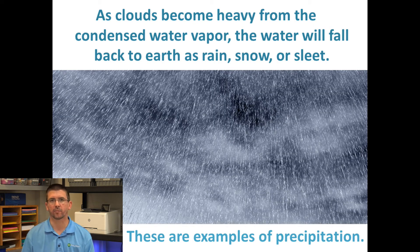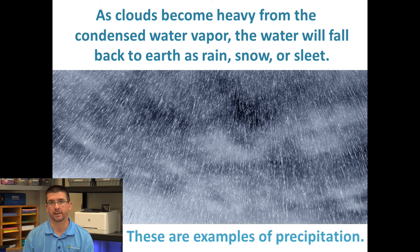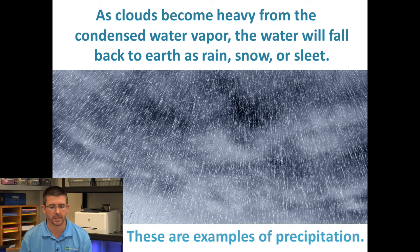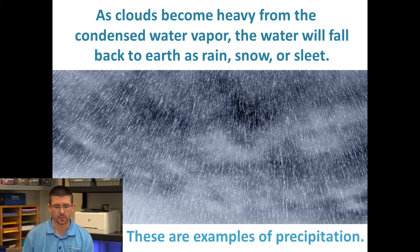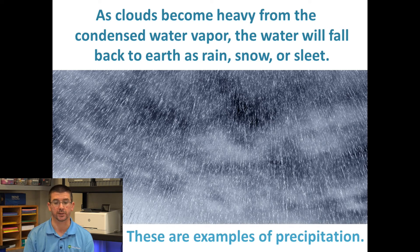Once enough water vapor collects in the clouds, the clouds start to get very heavy, and the water droplets start to form together into bigger drops that fall back to Earth. Usually in liquid form as rain, but it could also be snow or sleet. When water, whether in solid or liquid form, falls back to Earth, we call this process of the water cycle precipitation.